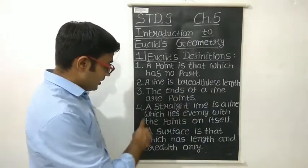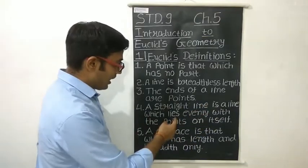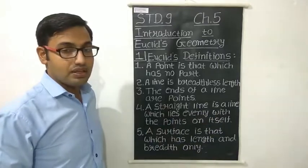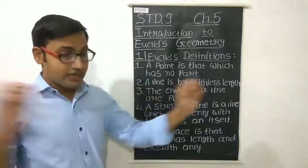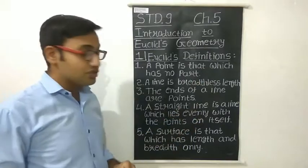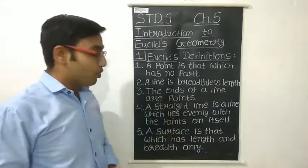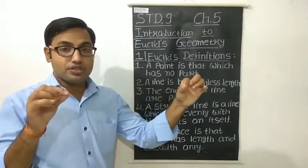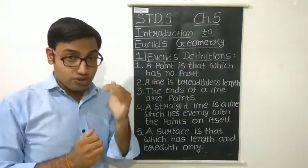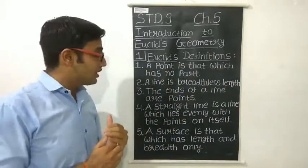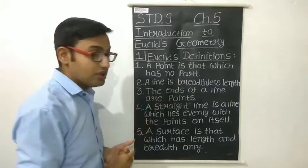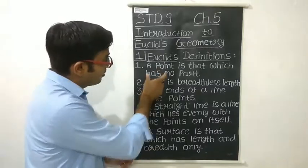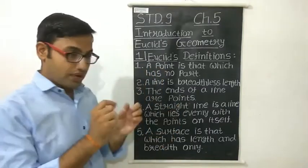The fourth definition: a straight line is a line which lies evenly with the points on itself. That means the line is totally made of points. The basic element of geometry is a point, and all figures are made from points. So the straight line is also made of points.